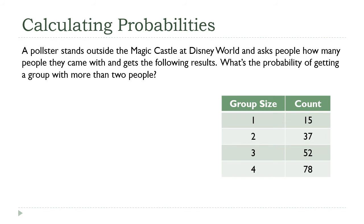Let's try another one here. Pollster, same data, guy standing outside the Magic Castle. What's the probability of getting a group with more than two people? Let's write it out, let's get some practice with our notation. Probability X is greater than 2. In statistics, when we talk about X, this generic variable X, this refers to an individual data value. So what I'm saying here is, what is the probability that a randomly selected individual is a member of a group with more than two people?